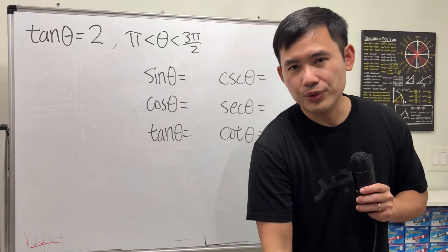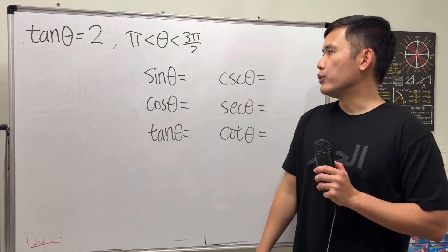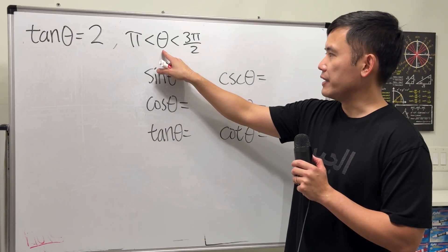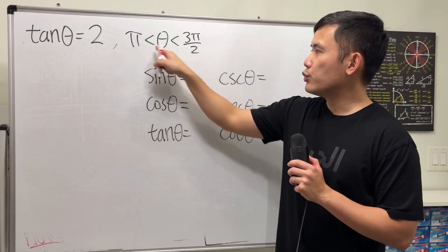This is what I would suggest you to do: the key is to use a reference triangle. And to do so, we first look at the angle theta. It says it's going from π to 3π/2. They are just a radian measure.